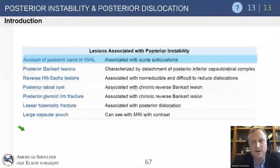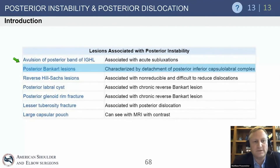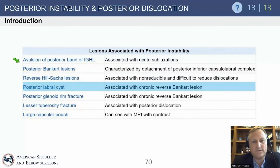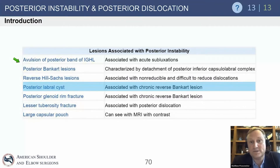The number one finding with posterior subluxations/dislocations is that the posterior band of the inferior glenohumeral ligament is torn. We also see a posterior Bankart lesion — the same as a posterior labral tear. A reverse Hill-Sachs is associated with non-reducible and difficult-to-reduce dislocations. A posterior labral cyst can have chronic reverse Bankart implications — we actually develop a cyst posteriorly, which is unique to posterior instability.